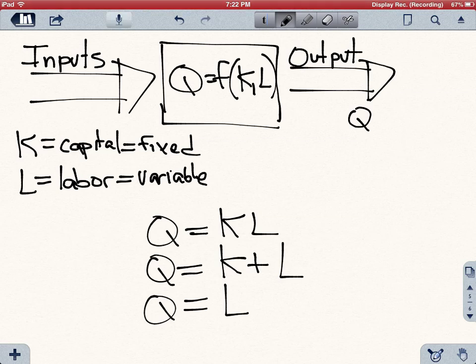If you have a pizzeria, your output is going to be the pizzas, and your capital is going to be the oven, and perhaps your rent, and your labor is going to be the number of workers you use to produce this pizza.